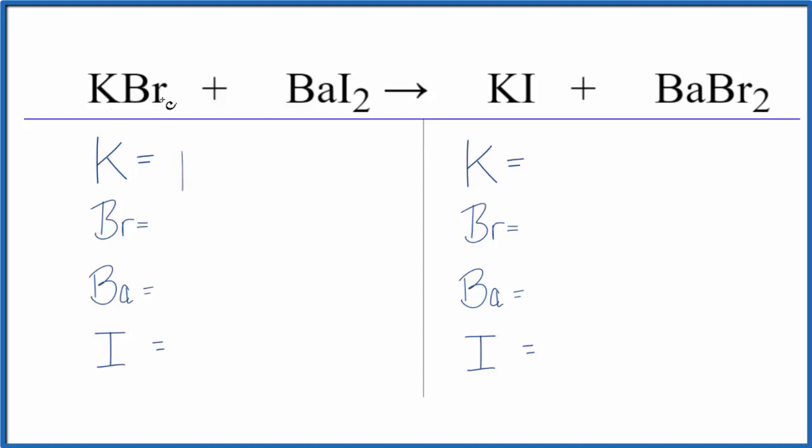So we have one potassium, one bromine, one barium, and two iodine atoms. On the product side we have one potassium, two bromines, one barium, and one iodine.